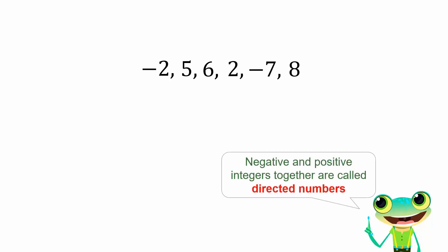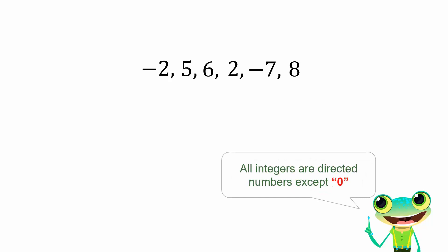These numbers are negative and positive integers. Together, they are called directed numbers as they have a value and direction. We can say that all integers are directed numbers except 0.